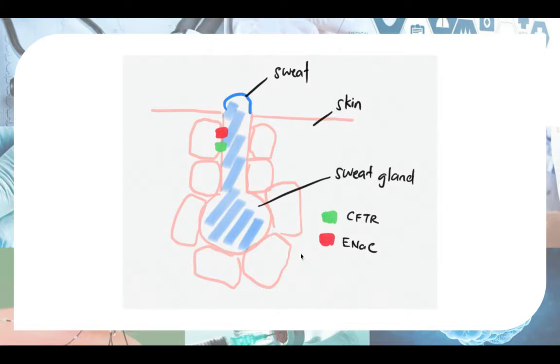So these are the circulatory cells and these are the cells that absorb back stuff. And in the cells that absorb back stuff, you have your CFTR protein and you also have your ENAC like before.